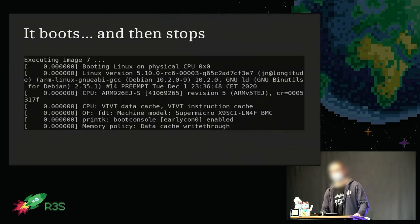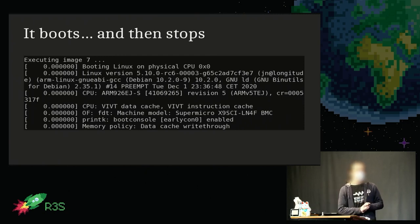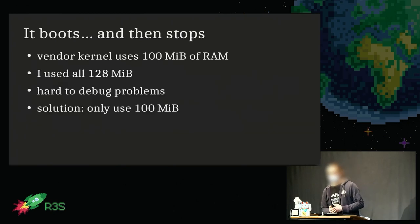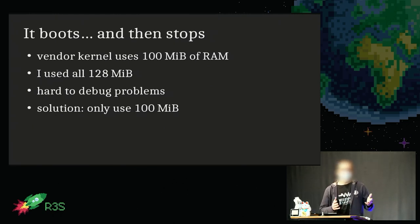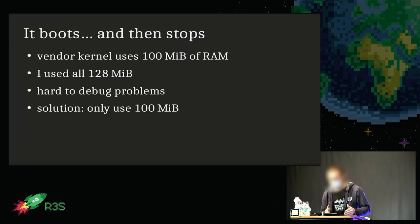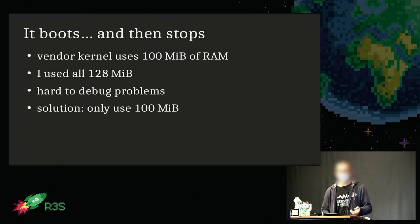Now I did this and I got a problem — it booted about this far and then just stopped for no apparent reason. The reason was a bit difficult to debug. It turned out that the vendor kernel on this board uses only 100 megabytes of the RAM that is actually installed. The board has 128 megabytes, but some of it is used for something else that I haven't figured out. So that was really difficult to debug. But once I reduced the amount of memory used to those 100 megabytes, it worked without a problem.